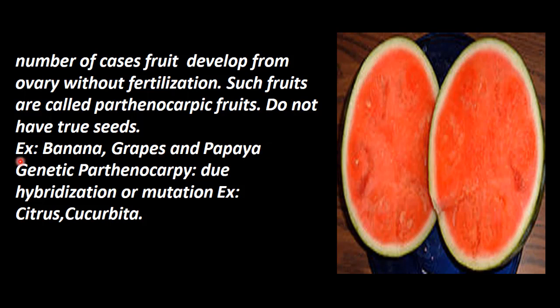This is genetic Parthenocarpy. Due to hybridization, natural mutation of the genes, fruits are formed without fertilization — that is called genetic Parthenocarpy. Examples include citrus and cucurbita.